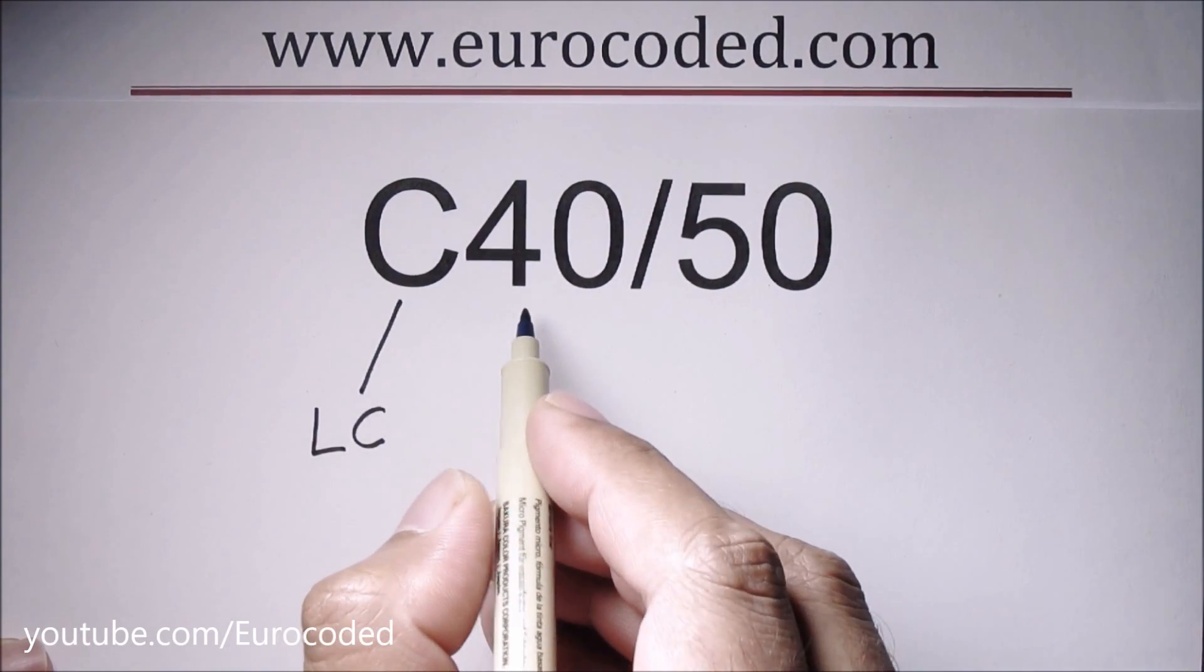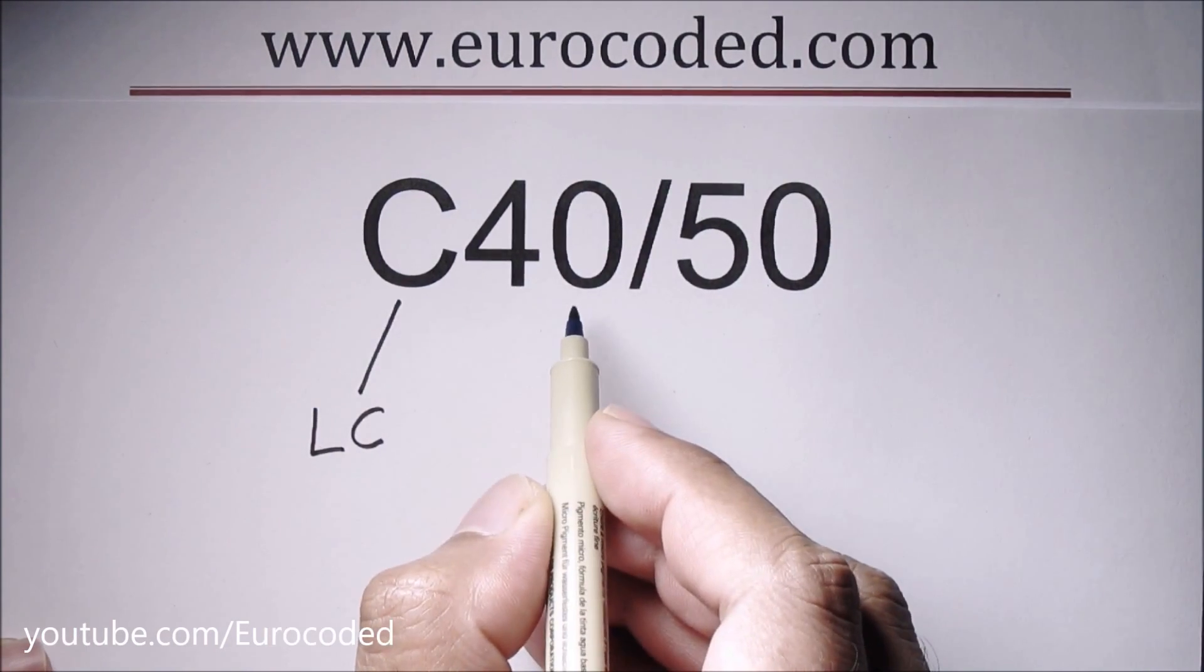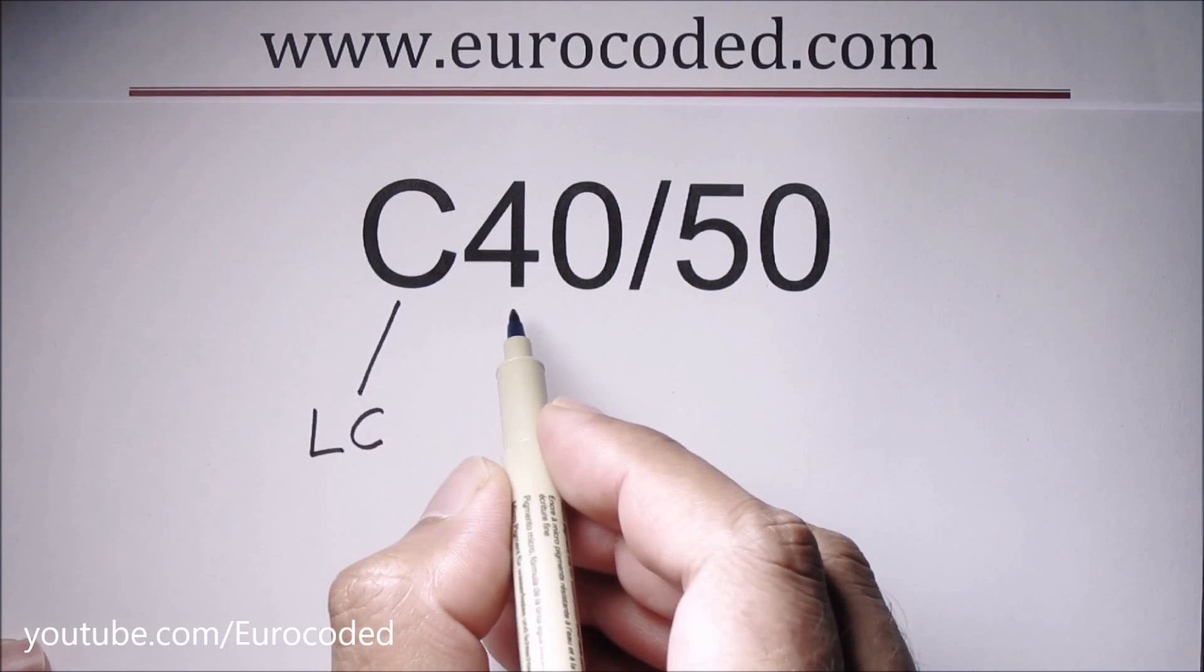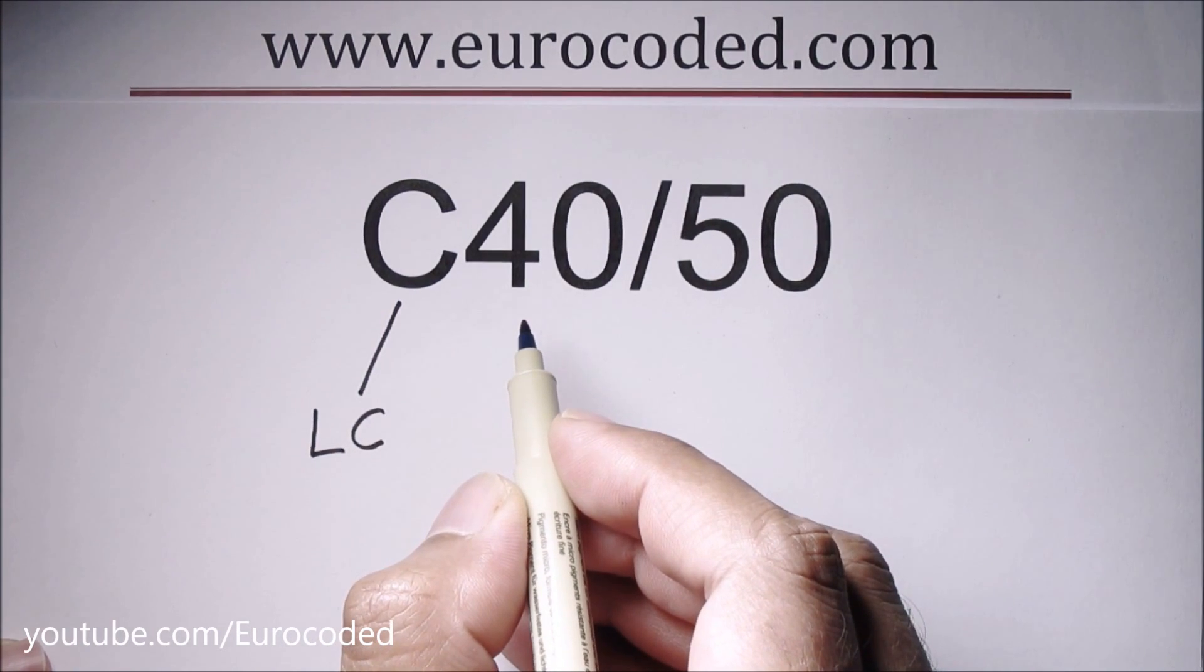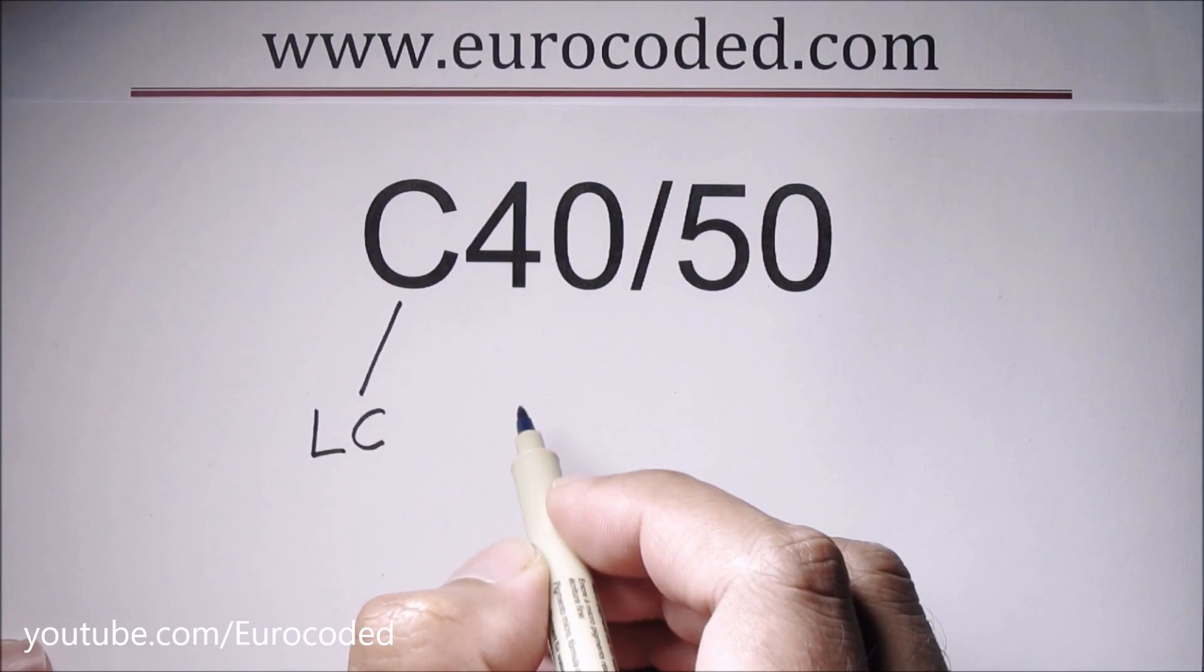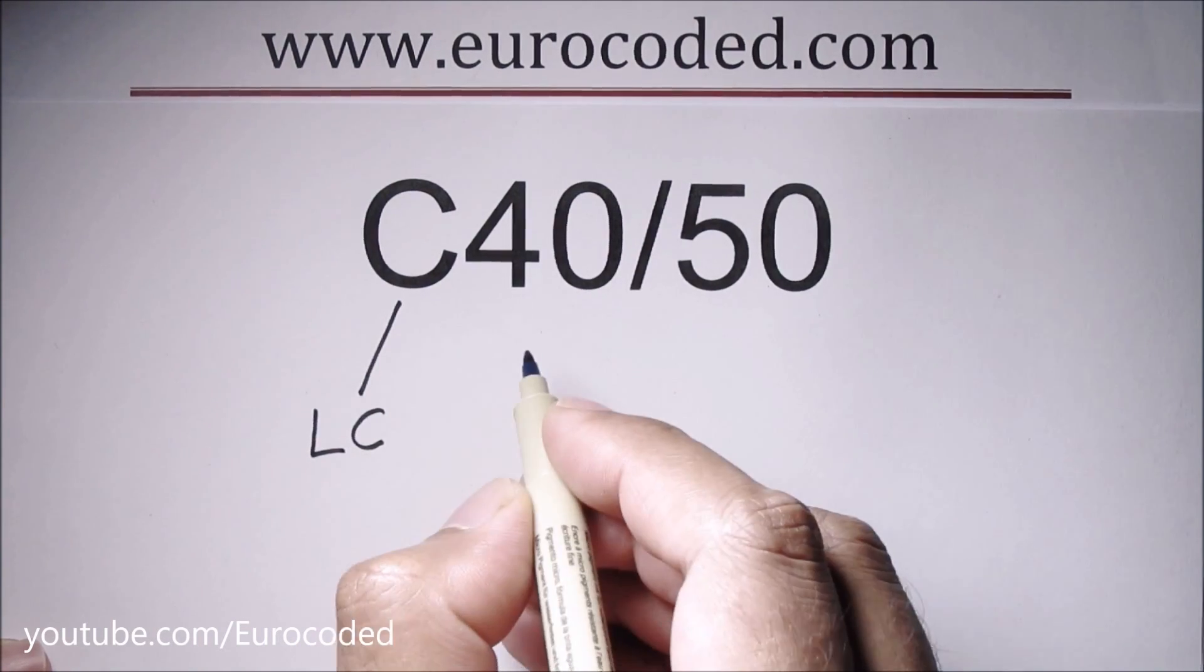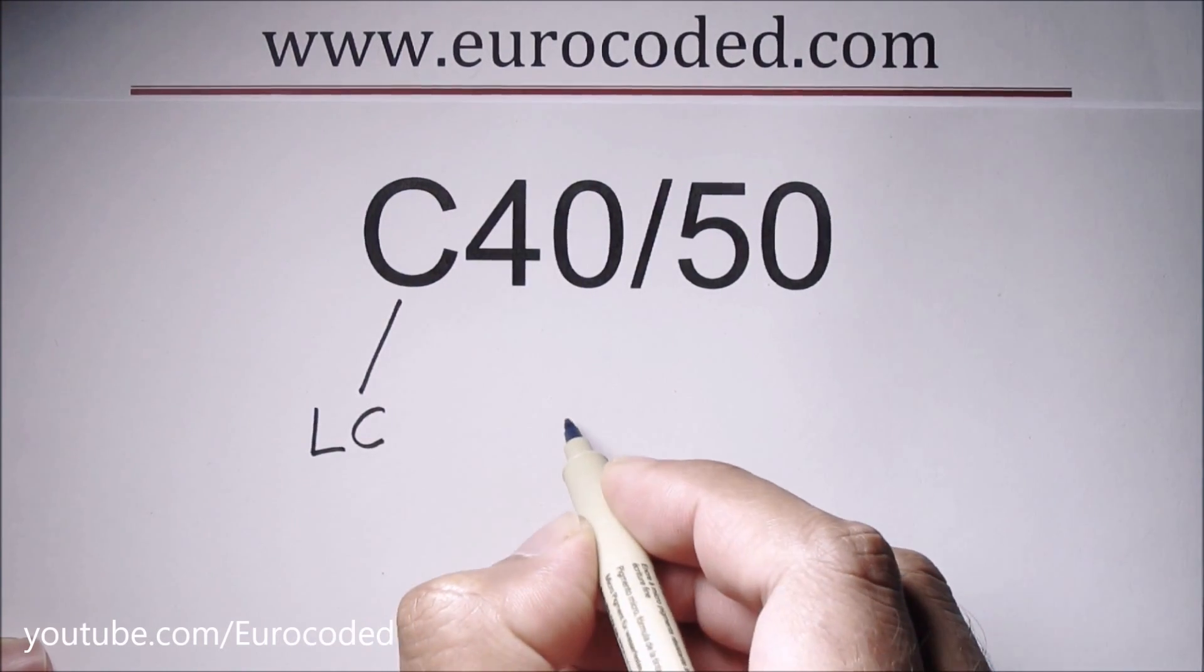Let's look into cylinder strength in more detail. Because in Eurocodes, mostly we use characteristic compressive cylinder strength, which is noted as FCK.